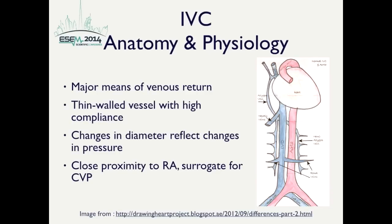Reviewing the anatomy and physiology of the IVC is important to understand this ultrasound exam. The IVC is a major means of venous return. It's a thin-walled vessel with high compliance. Changes in the diameter of the IVC reflect changes in pressure. It is in close proximity to the right atrium; therefore, the theory is that the IVC could be a surrogate for central venous pressure. The IVC adjusts to the body's volume status by changing its diameter depending on total body fluid volume.